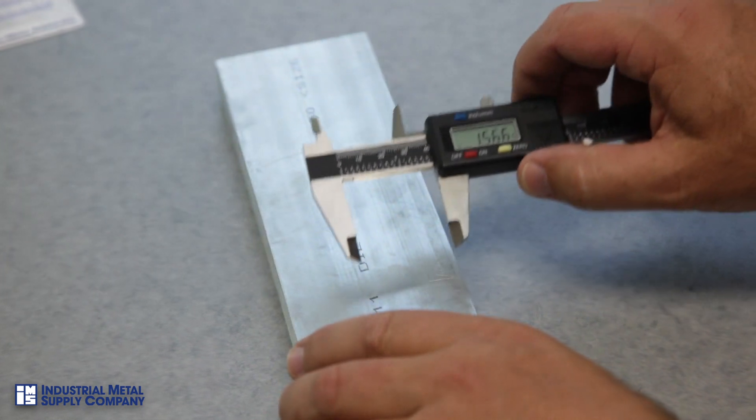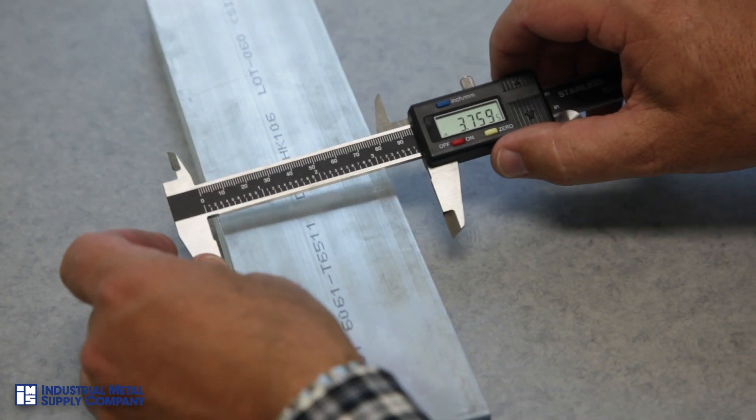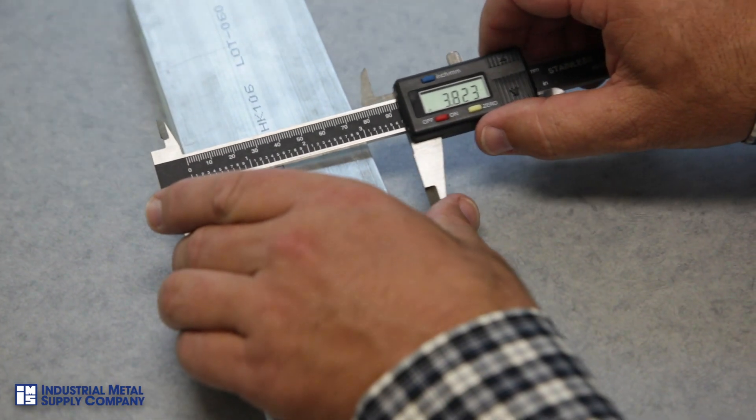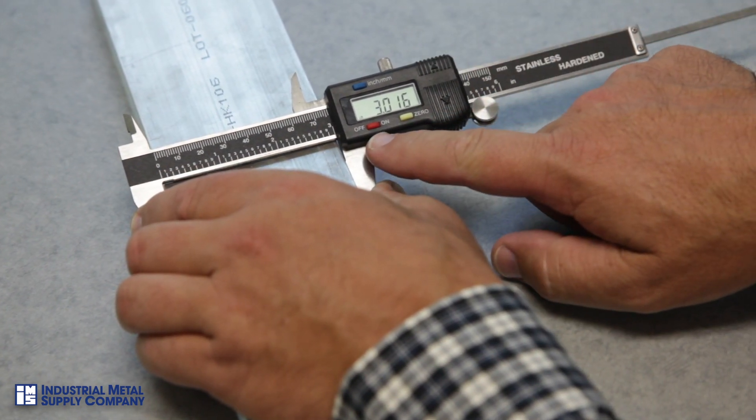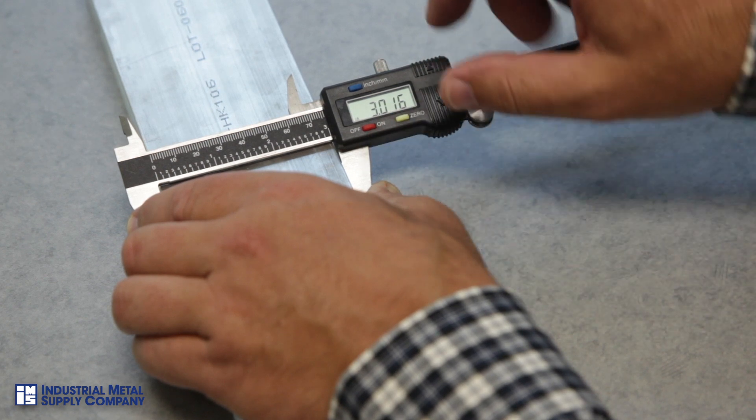Now measuring the three inch dimension, very same technique, opening it to greater than the three inch, and slowly but firmly closing the jaws against the sides of the metal, and reading the display at three inch sixteen thousandths.